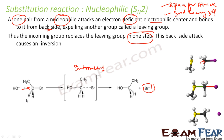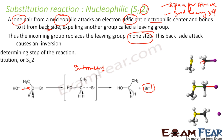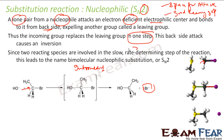Both are responsible for this reaction: OH minus attacks, then Br leaves. So increasing the concentration of OH minus increases the rate of reaction. The rate depends on both substrate and nucleophile, and that is why it is called SN2 — two stands for bimolecular nucleophilic substitution. Two reacting species are involved in the slowest step, which determines the rate of reaction.